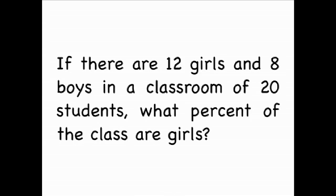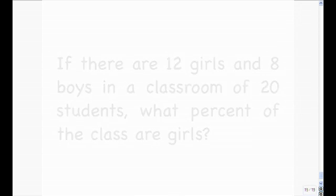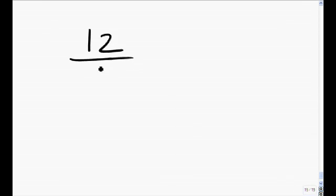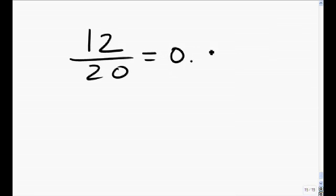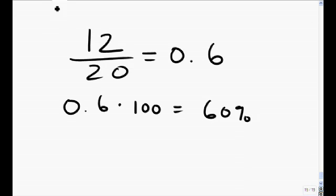If there are 12 girls and 8 boys in a classroom of 20 students, what percent of the class are girls? 12 girls out of 20 students is 0.6. Multiplying 0.6 by 100 gives us 60 percent. So 60 percent of the class consists of girls.